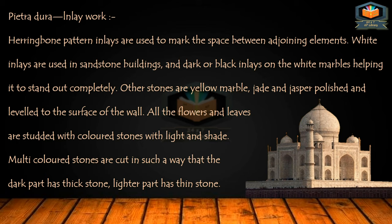White inlays are used in sandstone buildings and dark or black inlays on the white marble, helping them to stand out completely. Other stones used are yellow marble, jade and jasper, polished and leveled to the surface of the wall. All the flowers and leaves are studded with colored stones with light and shade. Multicolored stones are cut such that the dark part has thick stone and the lighter part has thin stone.